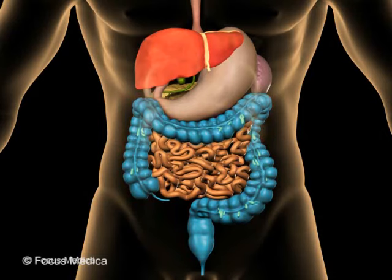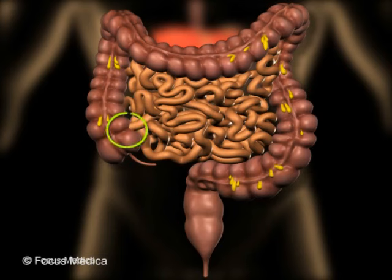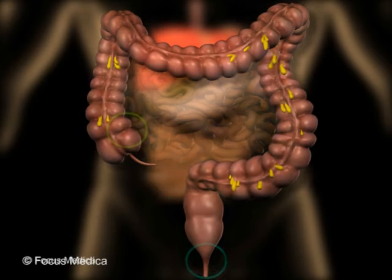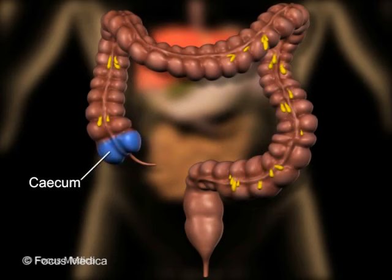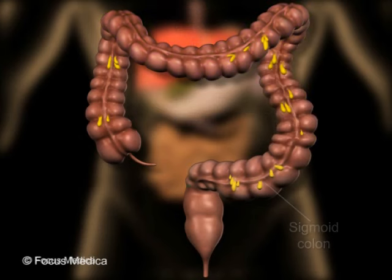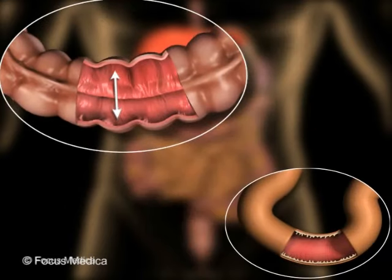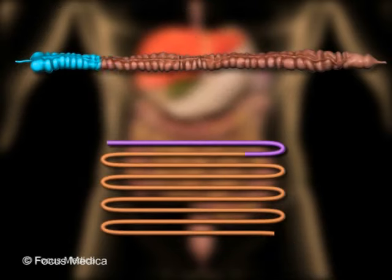The large intestine is a continuation of the small intestine. It extends from the ileocecal junction to the anorectal junction and includes the cecum, ascending colon, transverse colon, descending colon, sigmoid colon, and rectum. Its lumen is wider than that of the small intestine, though its length is shorter.